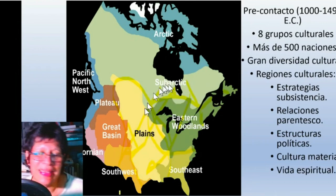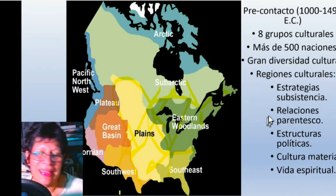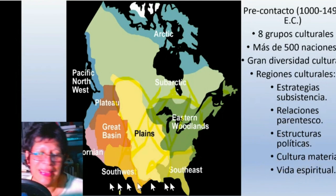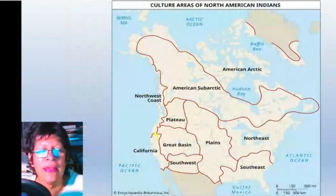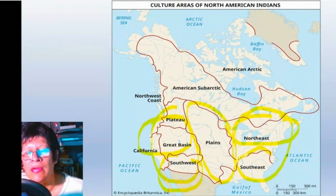These are what are known as cultural regions. You study cultural regions by considering these characteristics: the strategies of surviving, kinship — that is, relaciones de parentesco — the political structures, material culture, and the spirituality that they had.